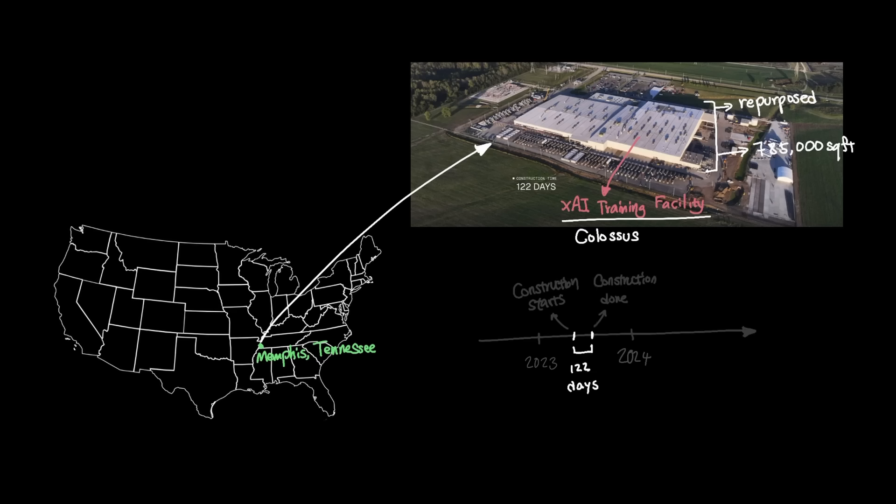xAI was able to complete the initial build out in just 122 days and they filled this facility with 100,000 GPUs to start with. With this freshly built AI training facility, xAI started to train their Grok 3 model with 80,000 H100 GPUs, utilizing 80% of their full capacity.